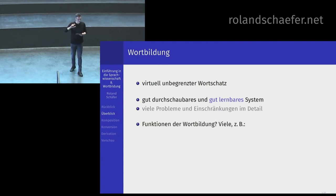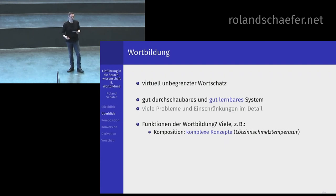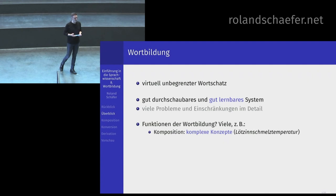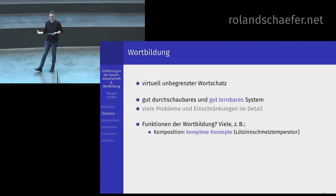Man kann sich einzelne Formen von Wortbildung angucken, zum Beispiel Komposition – also sowas wie Lötzinnschmelztemperatur. Das ist ein Kompositum, wo Lötzinn und Schmelztemperatur, also vier Substantive, irgendwie verarbeitet wurden. Damit kreieren Sie die Möglichkeit, auf ein relativ komplexes Konzept sich mit einem Wort zu beziehen. Es ist ein bisschen lang, aber wesentlich kürzer, als wenn Sie sagen würden: die Temperatur, bei der Lötzinn schmilzt – das ist länger und syntaktisch komplex.